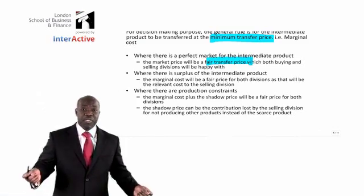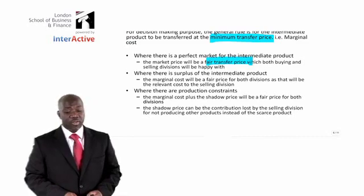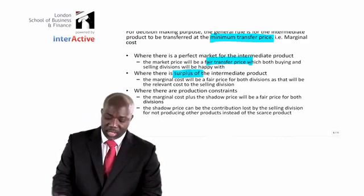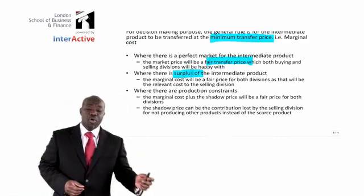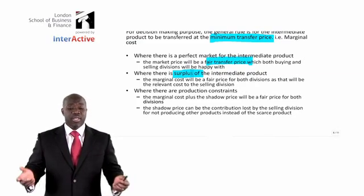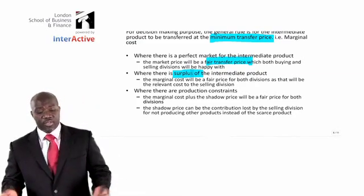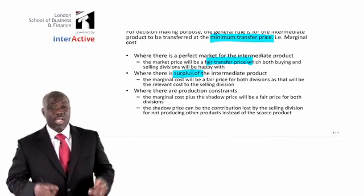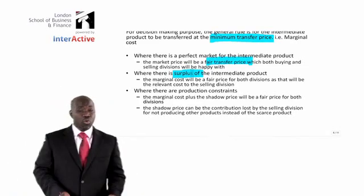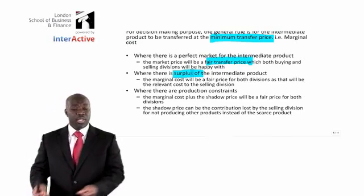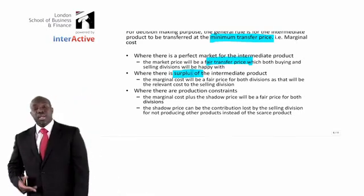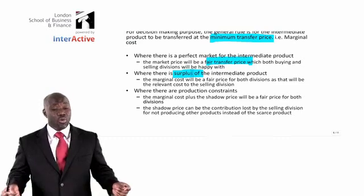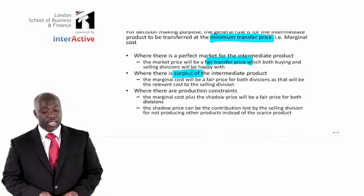Both divisional managers will be happy with such a transfer price. In a situation where we have production surplus, the ultimate transfer price will be to transfer at marginal cost. This is fair for decision-making purposes because the only relevant cost is the marginal cost — fixed cost is not relevant. So marginal cost as a transfer price will be fair to both divisions, as it is the only relevant cost in such a situation.